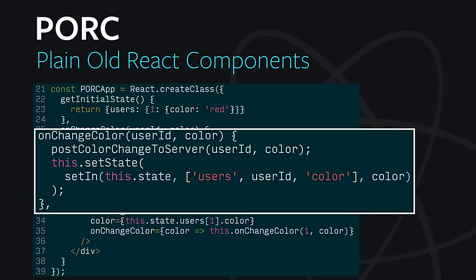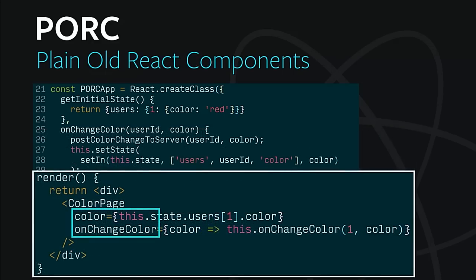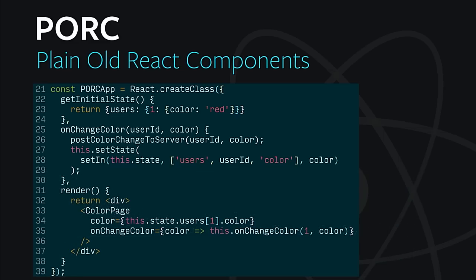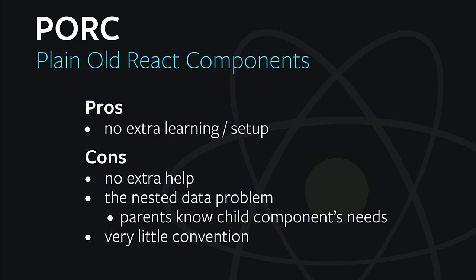You have an update method that will take a user ID and a color and update the state for that user ID. Then in the render method, we can just give the color for user one and a callback function that will take a color and update it. This works great for small-scale apps. But it can get really cumbersome when you have larger apps with lots of shared state — you find yourself plumbing the props down through all these levels, it's easy to miss one, and it's hard to move things around if you need to refactor. That's why we look for another, more formal way to do this.